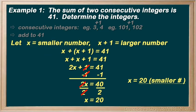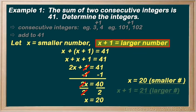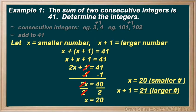We documented that x plus 1 is the larger number. So, our larger number here is 20 plus 1, or 21. So, our two numbers are 20 and 21. And yes, we can confirm they are consecutive. And if we add them, we get 41. Perfect. We've confirmed.